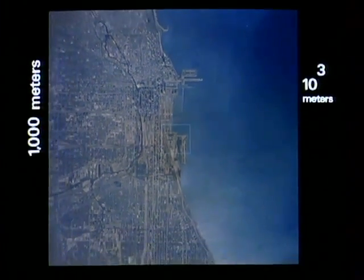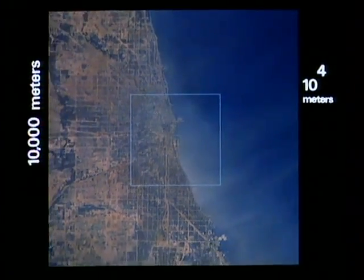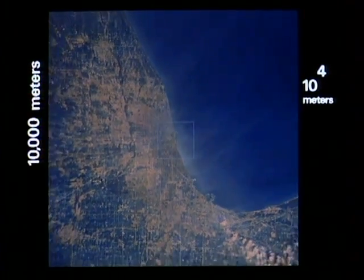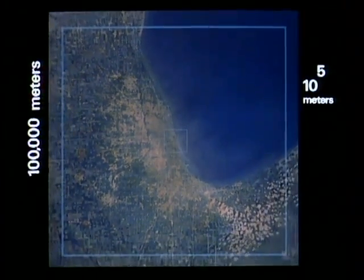10 to the 4th meters, 10 kilometers, the distance a supersonic airplane can travel in 10 seconds. We see first the rounded end of Lake Michigan, then the whole great lake. 10 to the 5th meters, the distance an orbiting satellite covers in 10 seconds.